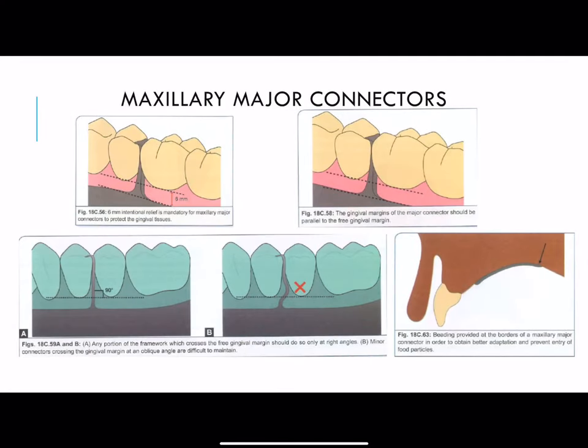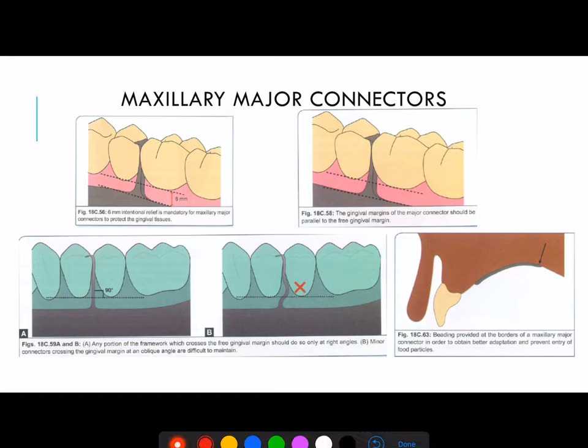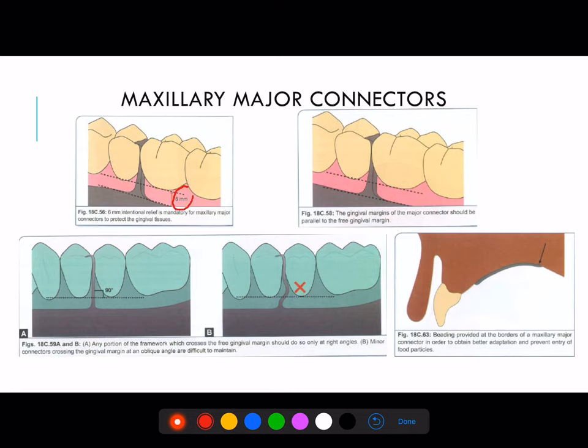Hello friends, myself Dr. Akshay. Let's talk about maxillary major connectors. As a mandibular major connector should be placed 4 mm away from the gingival margin, similarly a maxillary major connector should be placed 6 mm away from the free gingival margin.